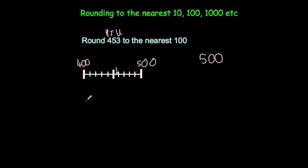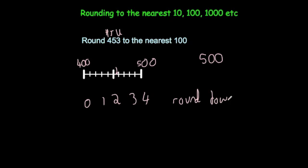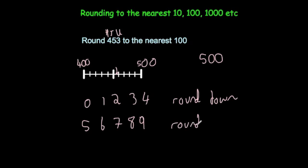The rule is: remember you've got hundreds, tens, and units. If the tens digit is 0, 1, 2, 3, or 4, you're going to round down. If the number in the tens column is 5, 6, 7, 8, or 9, you're going to round up to the nearest hundred.